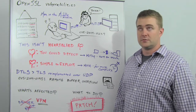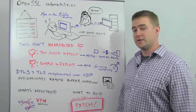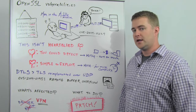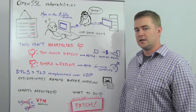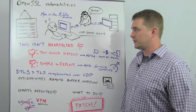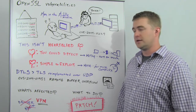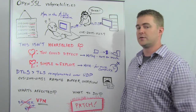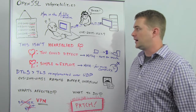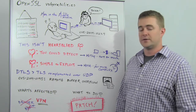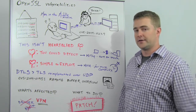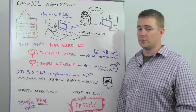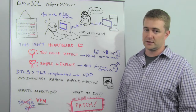Today we're going to talk about the recent OpenSSL vulnerabilities. There were six of them released on Thursday. The two we're going to focus on are the Man in the Middle and the DTLS Overflow. The other ones are denial of service attacks — we're not going to go into too much detail on them, but they're all important and you should patch against them.